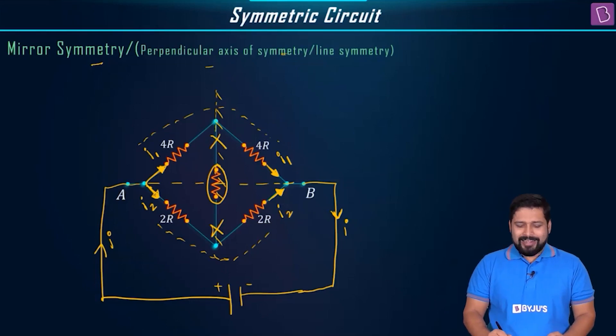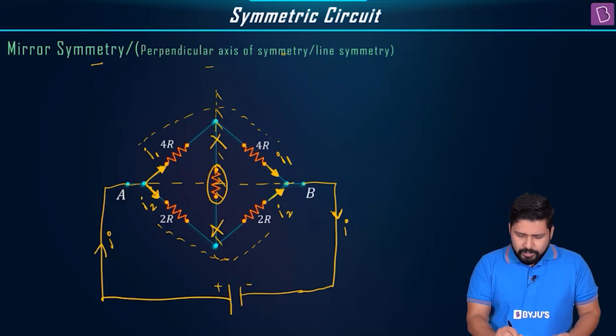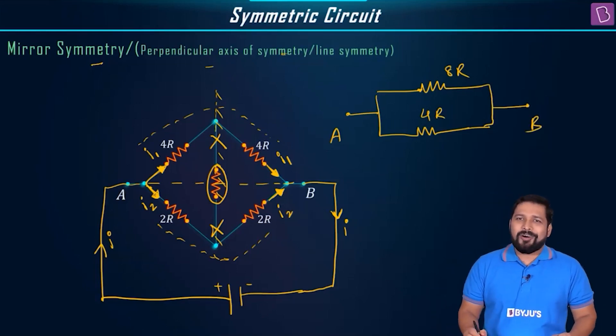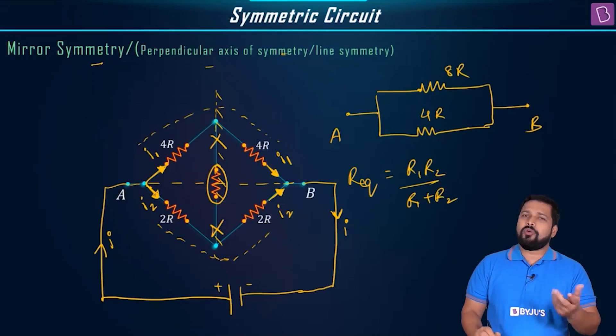If you just remove that, then you have the same condition. 4R and 4R in series combination and 2R and 2R in series combination and together they are in parallel. So you can directly draw the equivalent circuit like A, you will have 8R and you will have 4R connected in parallel across A and B. This is how you are going to solve this.